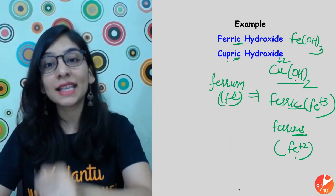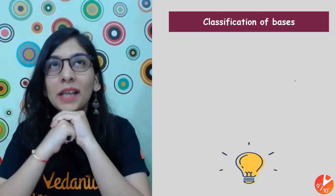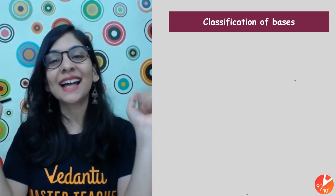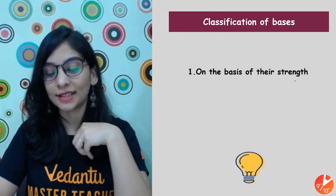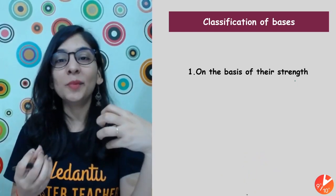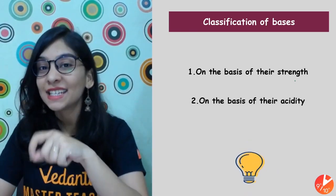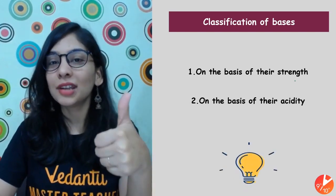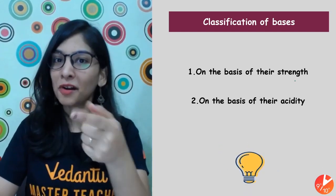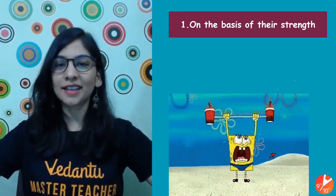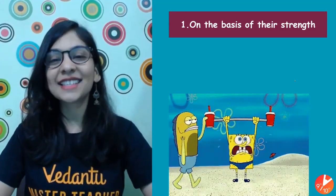Now, how can I classify bases? First, we'll classify on the basis of their strength — how strong or weak they can be. Second, on the basis of their acidity — which I discussed in session one when I talked about acids showing basicity and bases showing acidity. Let's talk about the first: on the basis of strength — who is stronger and more powerful?